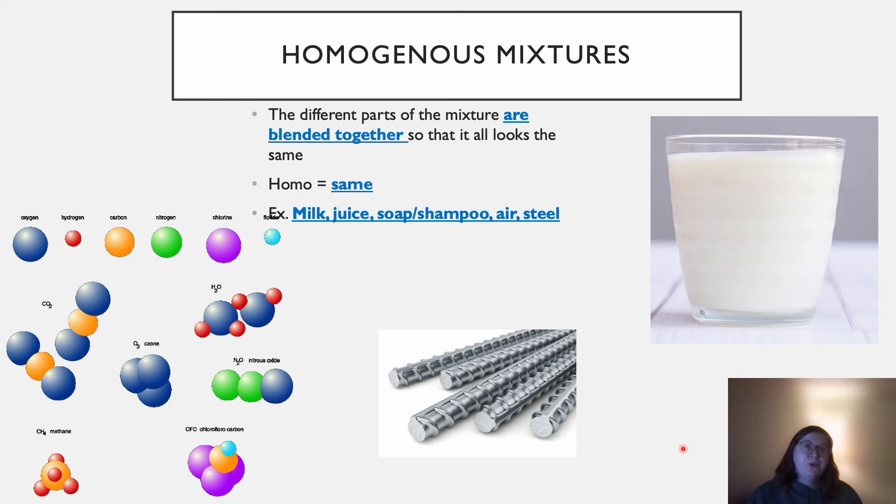Something like soap or shampoo I included because you can turn your bottle of shampoo and look at the back and look at the ingredients list and see that it's made of tons of different things, but you usually can't see the different pieces. And then steel is what's called an alloy. So it's different elements together to make a metal. So steel is mostly iron and then a little bit carbon, but you can't see those different pieces. So it's homogeneous.